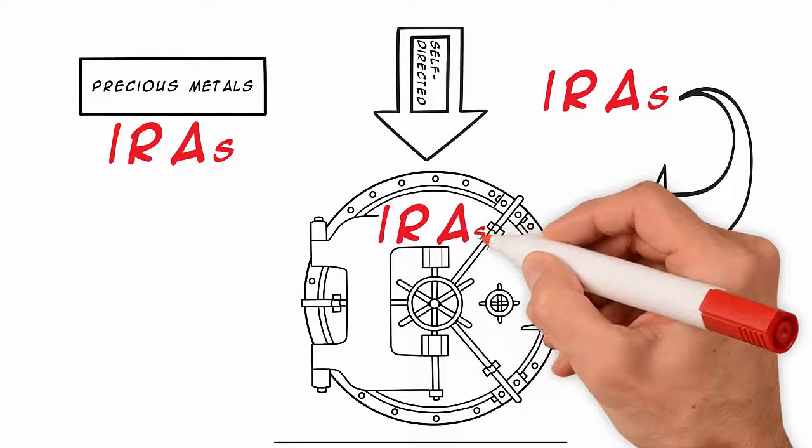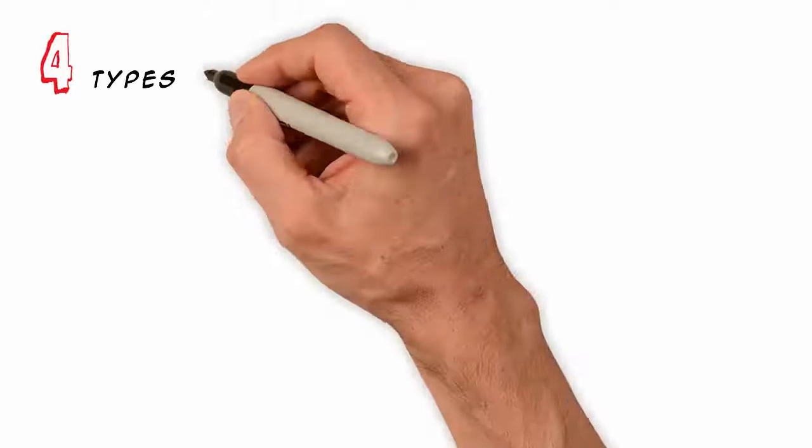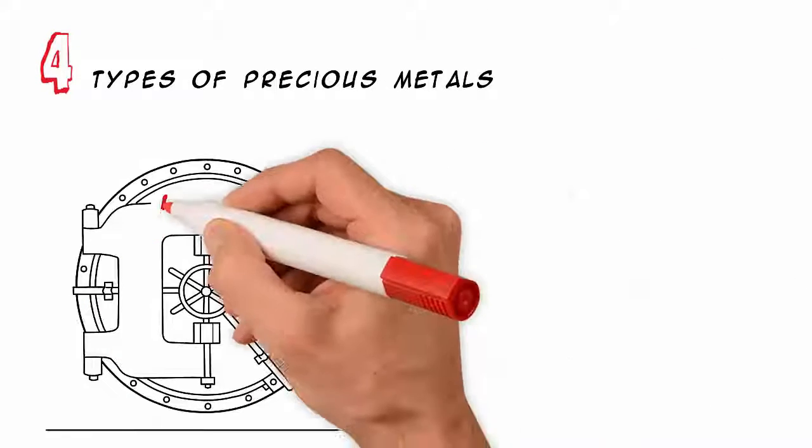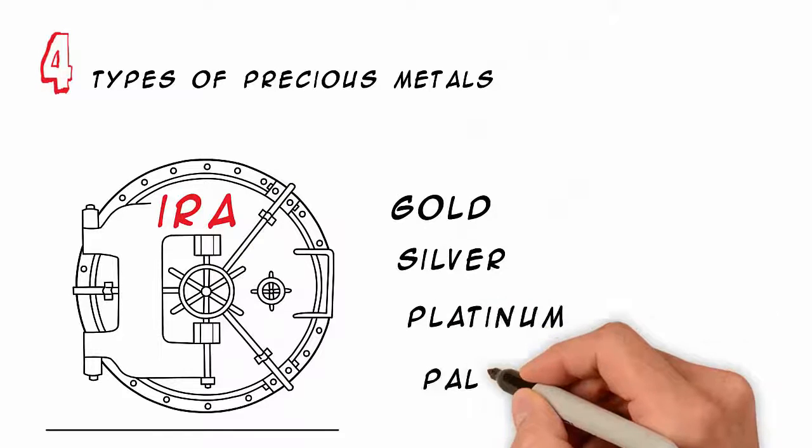Precious metals self-directed IRAs can include many different types of coins. The four types of precious metals allowed to be held in an individual retirement account are gold, silver, platinum and palladium,